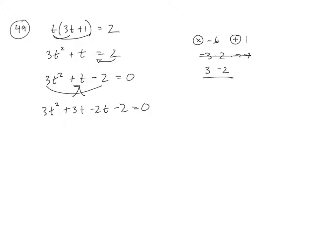Now, since there's four terms, I'm going to group factor. So I'll pull a 3t out of those first two, leaving me with a t + 1. And then let's divide, what'll divide into both those? A negative 2.